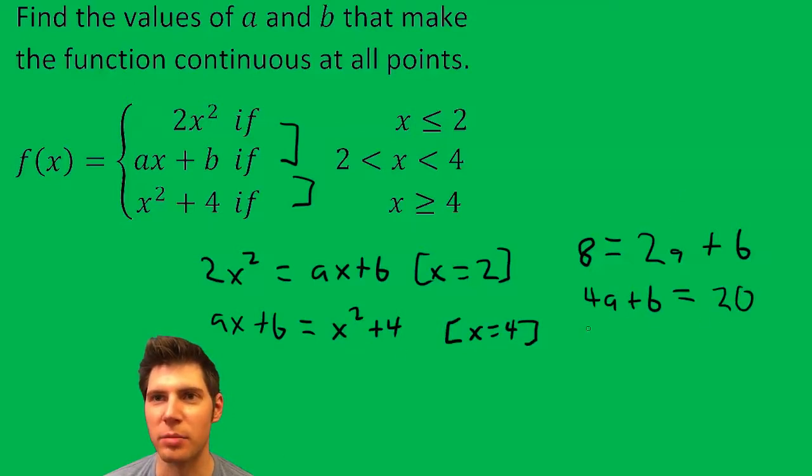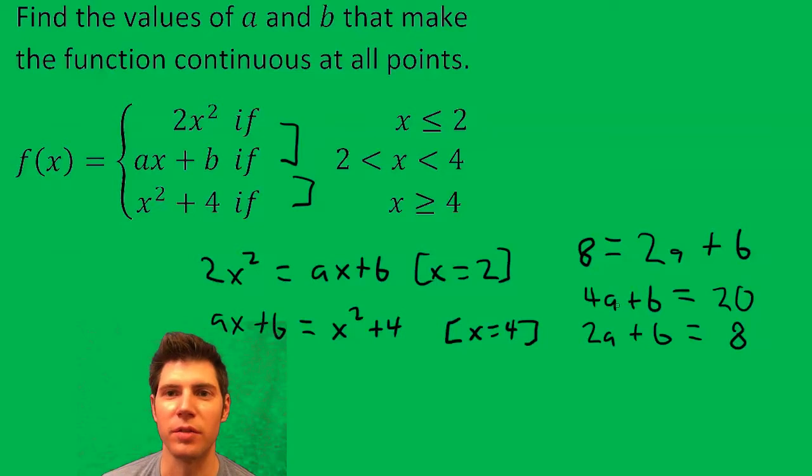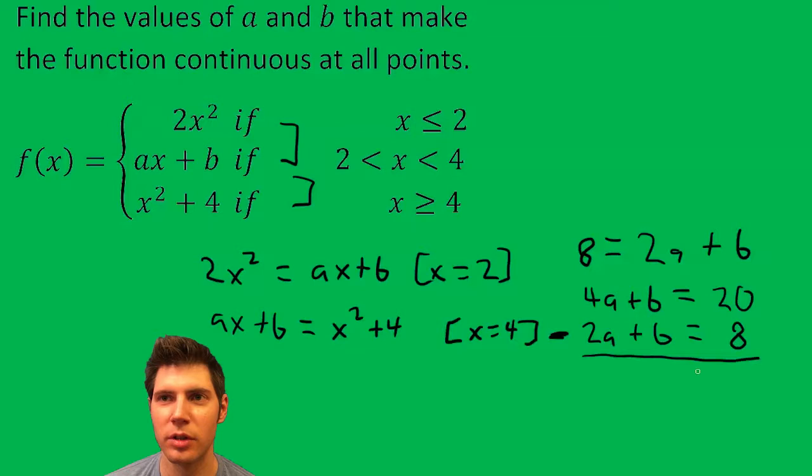So I'll just align up the a's and the b's here. Two a plus b equals eight. And now we can solve this using elimination. So we're going to subtract this whole row. So we get two a equals, those cancel, 12. So a equals six.